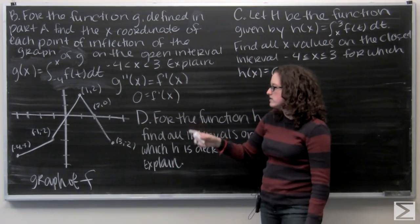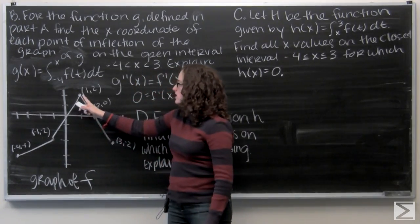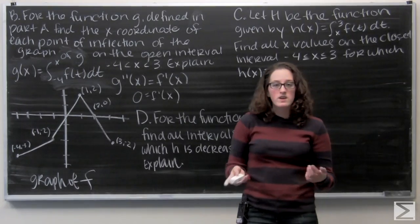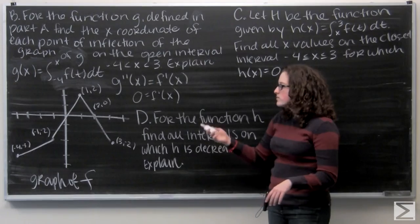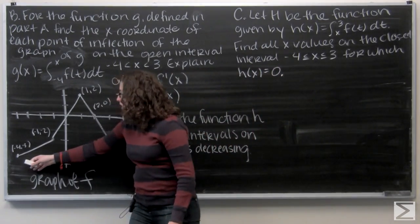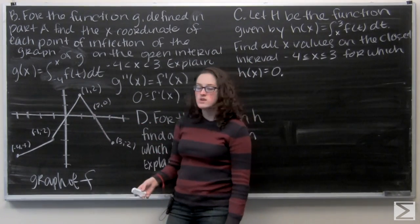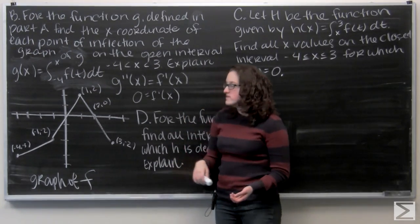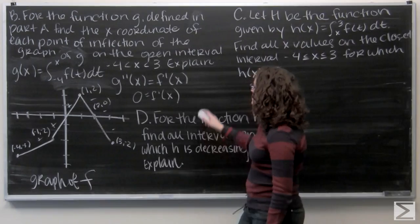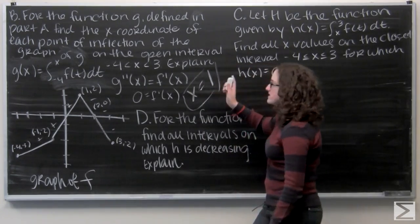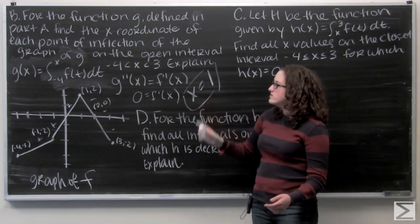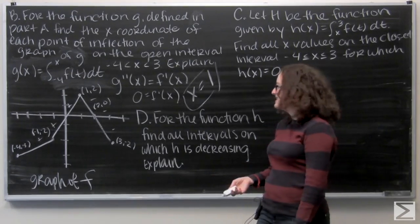Looking at the graph, a better way to think about where f prime equals zero is where f switches from increasing to decreasing. Since we have a piecewise function, that definition is the best one to use. We can see that f increases from negative four all the way to one, and then starts to decrease after one. So f prime of x equals zero when x equals one — increasing, then decreasing. The inflection point of the graph of g is at x equals one.